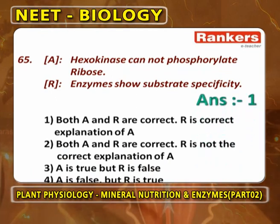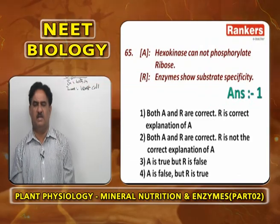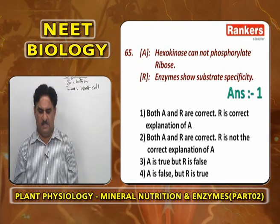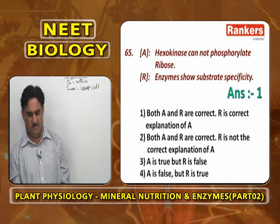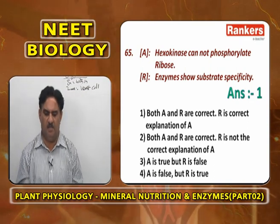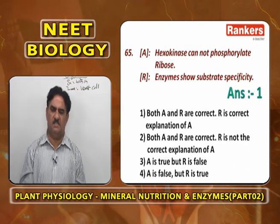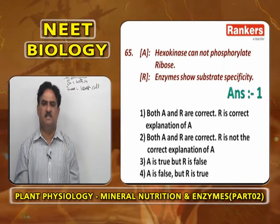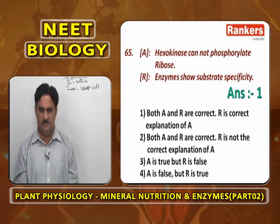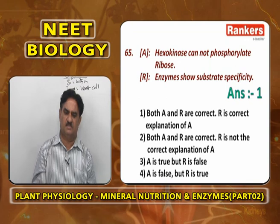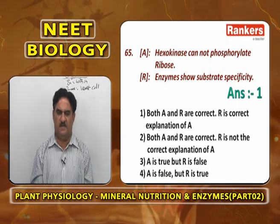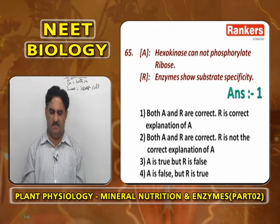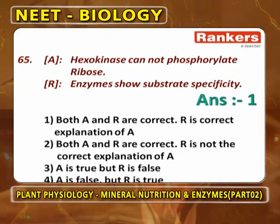Hexokinase cannot phosphorylate ribose because enzymes show substrate specificity. Hexokinase phosphorylates only glucose, not ribose sugars. The outstanding property of almost all enzymes is specificity — this assertion-reasoning is based on that property. Both assertion and reason are correct, and R is the correct explanation of A — first option.